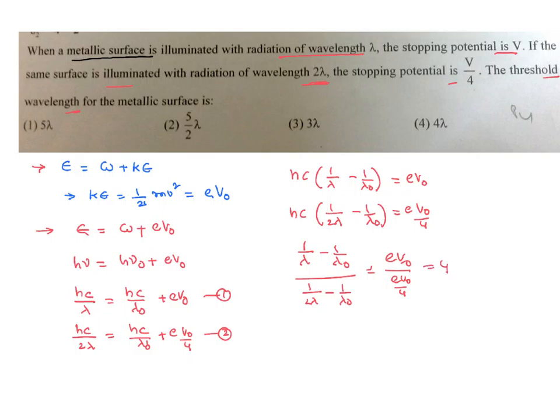That is nothing but equal to 4 itself. So if you simplify this equation further, lambda₀ minus lambda by lambda and lambda₀ by lambda₀ minus 2 lambda by 2 lambda and lambda₀ is equal to 4. By simplifying this further, we can get an equation as we can cancel this lambda₀ and lambda₀. Then what is remaining is going to be equal to 2 of lambda₀ minus lambda by lambda₀ minus 2 lambda is equal to 4.